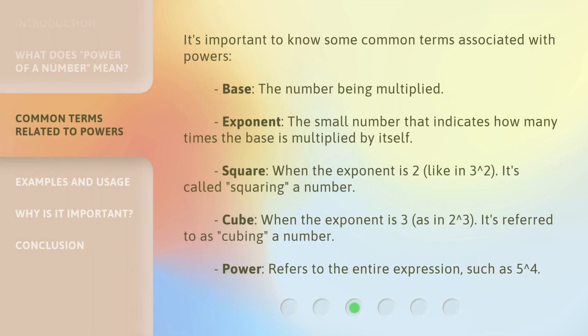It's important to know some common terms associated with powers. Base: the number being multiplied. Exponent: the small number that indicates how many times the base is multiplied by itself. Square: When the exponent is 2 (like in 3 to the power of 2), it's called 'squaring' a number.